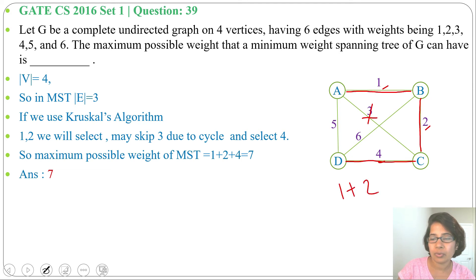So 1 plus 2 plus 4 is 7. So maximum possible weight can be 7 and minimum possible weight can be 6. That's 1 plus 2 plus 3 if 3 is not creating a cycle, and maximum possible weight is 7: 1 plus 2 plus 4.